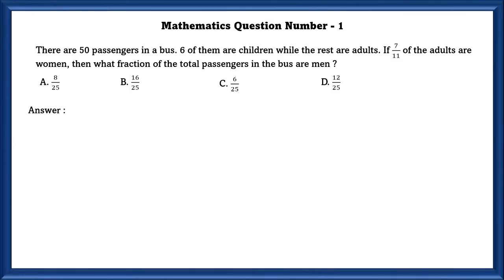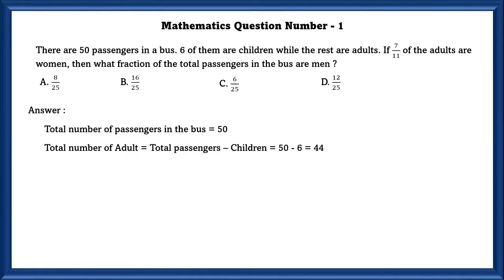There are 50 passengers in a bus. 6 of them are children, while the rest of them are adults. If 7/11 of the adults are women, then what fraction of the total passengers in the bus are men? The total number of passengers is 50, and the total number of adults is equal to 50 minus 6, which is equal to 44.